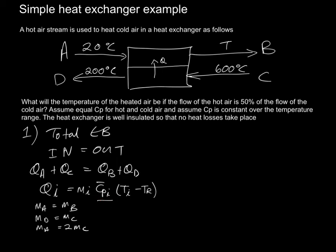We can also see that all of the masses will end up being written in terms of MC. In other words, for A and B we will write 2MC, and for D and C we will write just MC. Let's do that substitution.